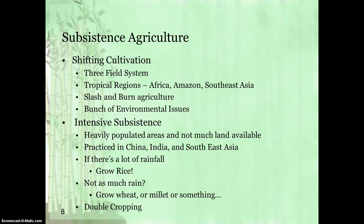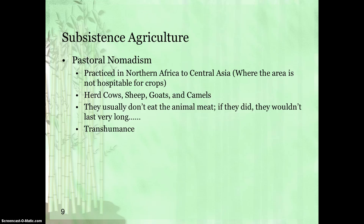The last subset under subsistence farming or agriculture is pastoral nomadism. This is practiced in Northern Africa to Central Asia. It's practiced where the area is not quite hospitable for crops — usually too dry. If you know your geography, Northern Africa is the Saharan Desert, Central Asia the Gobi Desert. These areas are usually too dry to grow crops, so you use animals.